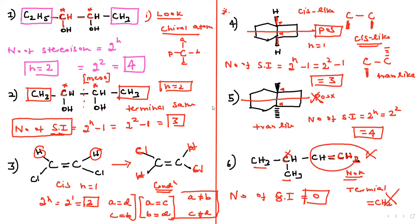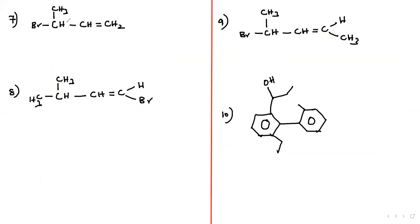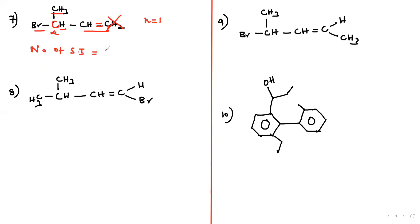Another question: this carbon contains CH3, Br, H, and a bulky group — it is chiral. But the terminal is CH2, so no geometrical isomerism. n = 1, terminals are different, so formula is 2^n = 2^1 = 2 stereoisomers.